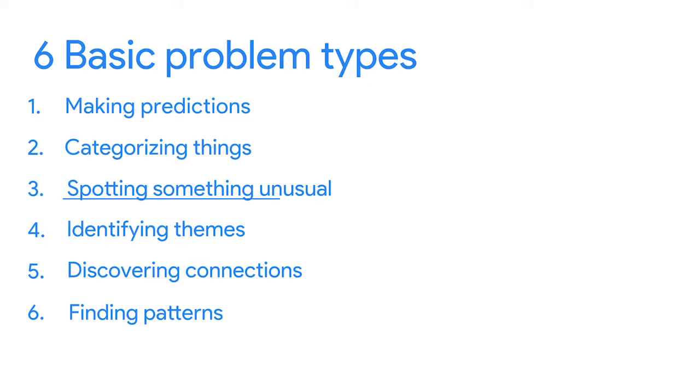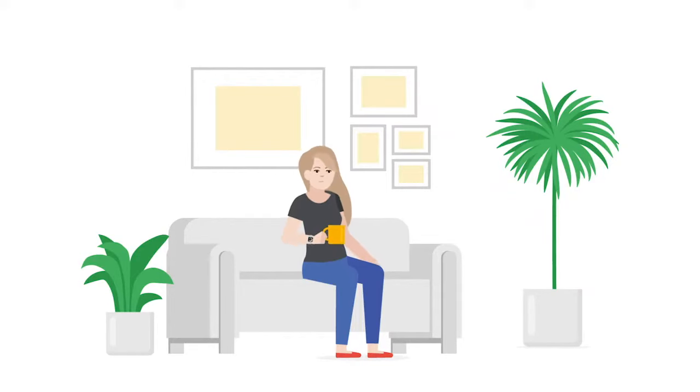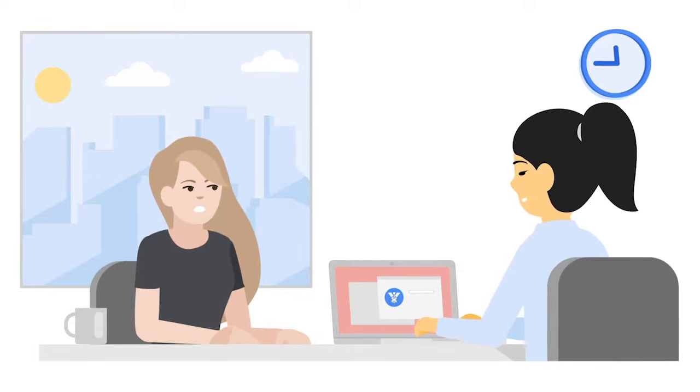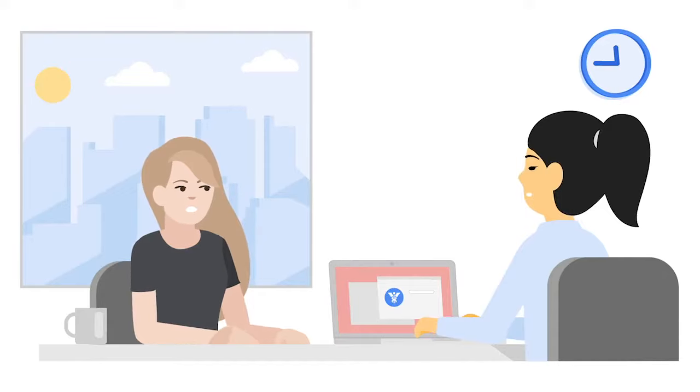Now let's talk about a problem that involves spotting something unusual. Some of you may have a smart watch. These apps can help people stay healthy by collecting data such as their heart rate, sleep patterns, and exercise routine. There are many stories about health apps actually saving people's lives. One is about a young, athletic woman with no previous medical problems. One night, she heard a beep on her smart watch — a notification said her heart rate had spiked. The watch, acting like a data analyst, spotted something unusual: her resting heartbeat was suddenly 120 beats per minute, when the data showed it was normally around 70. Thanks to her smart watch, she went to the hospital and discovered a condition that could have led to life-threatening complications.